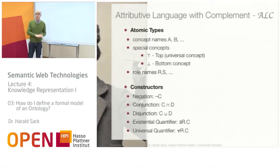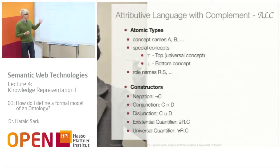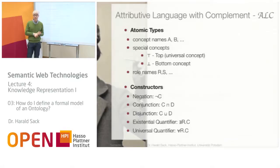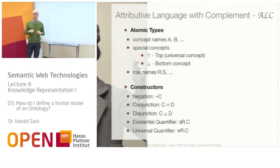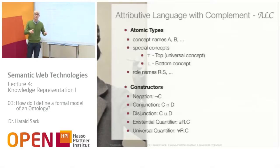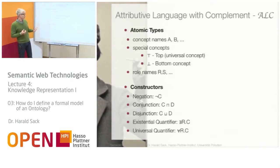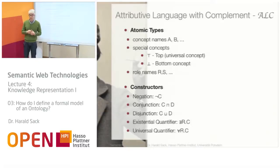One of the most basic description logics is ALC — the attributive language with complement. In ALC, you have atomic types: concept names written as A, B, C in capital letters, plus two special concepts. The top concept is above all other concepts — all concepts are subclasses of this universal concept. The bottom concept is always empty — no individual belongs to it — and it is itself a subclass of all other concepts. You also have role names, typically written as R, S, T.